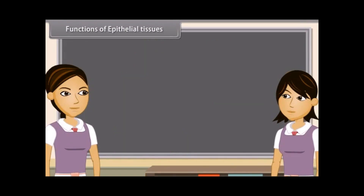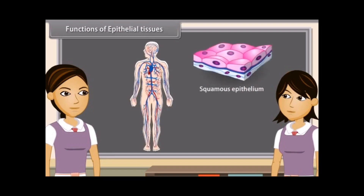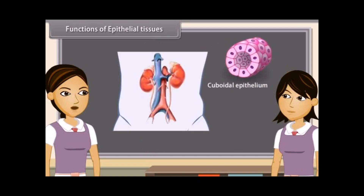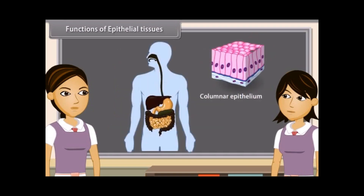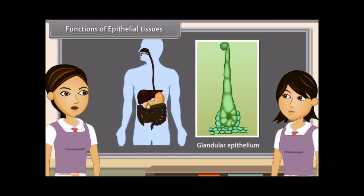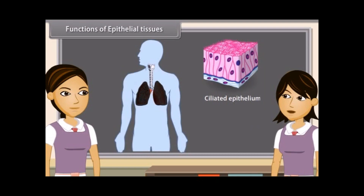Functions of epithelial tissues: Squamous epithelium protects the underlying parts of the body from mechanical injury, entry of germs, chemicals and also from drying. Cuboidal epithelium helps in absorption, excretion and secretion, and also gives mechanical support. The main function of columnar epithelium is absorption and secretion. The main function of glandular epithelium is secretion from these glands. The rhythmic, concentrated beating of cilia of ciliated epithelium moves solid particles in one direction through ducts.